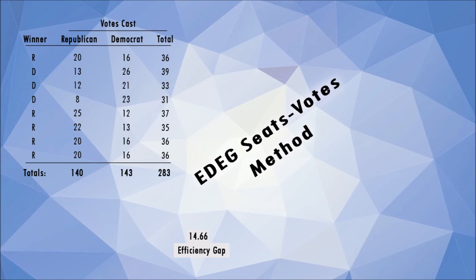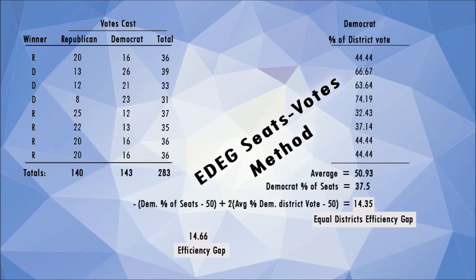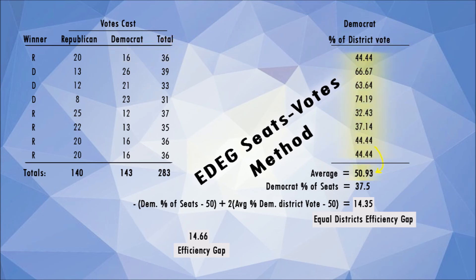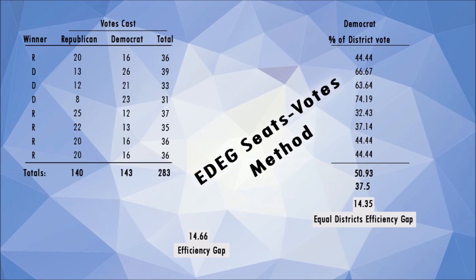Okay, blank slate — we're starting from scratch, and I just need 15 seconds. First, we calculate the percentage of the Democratic vote in each district. The average of these percentages is 50.9. Democrats won three of the eight seats, so their seat percentage is 37.5. And that is it — that's all we need to compute. We just plug these numbers into the seats-votes equation to come up with the efficiency gap of 14.35. Simple, easy, and to the point. I call this the Equal Districts Efficiency Gap.